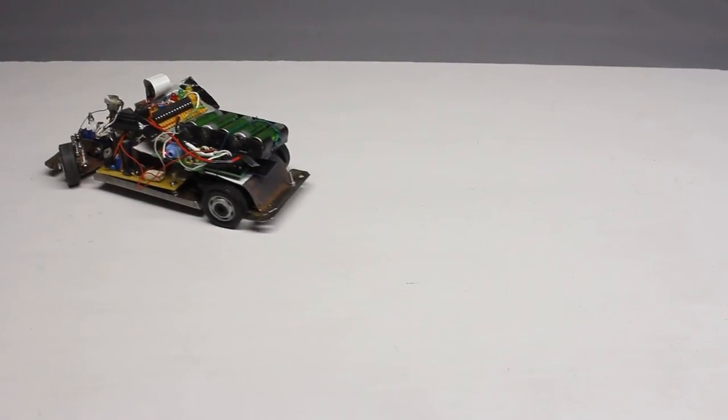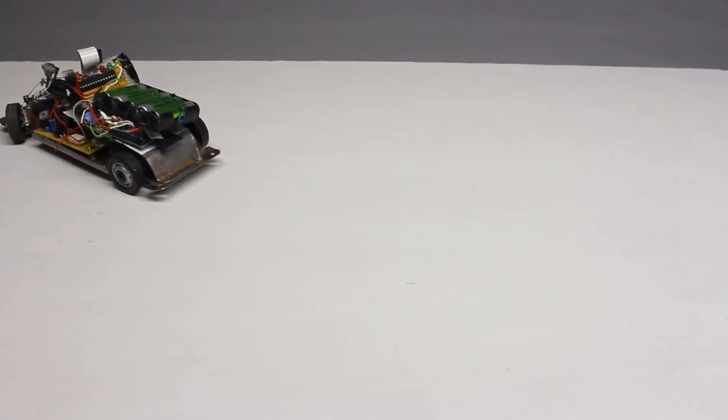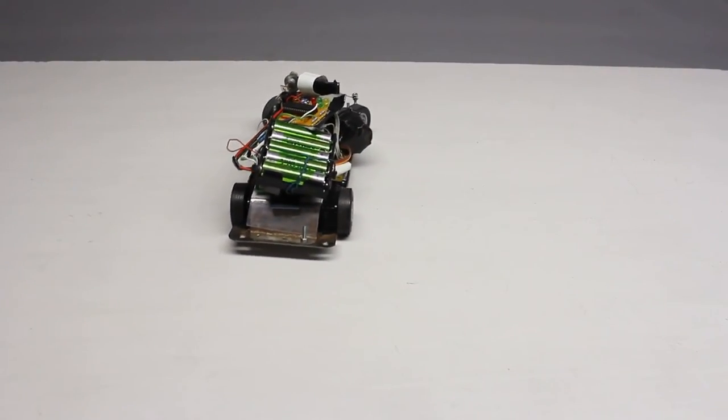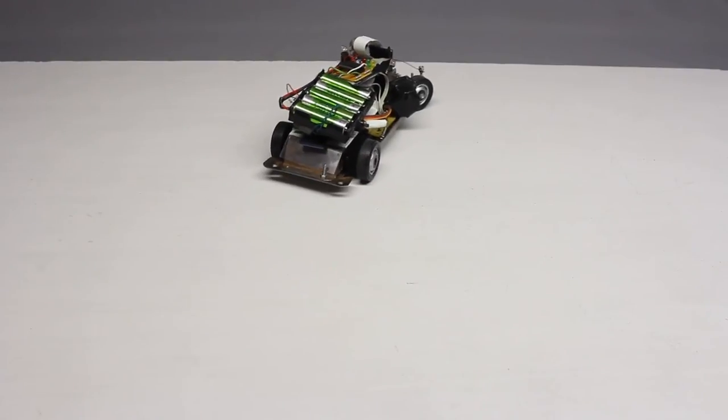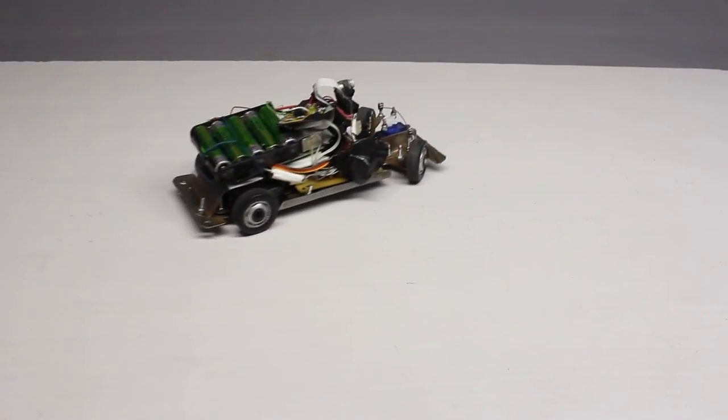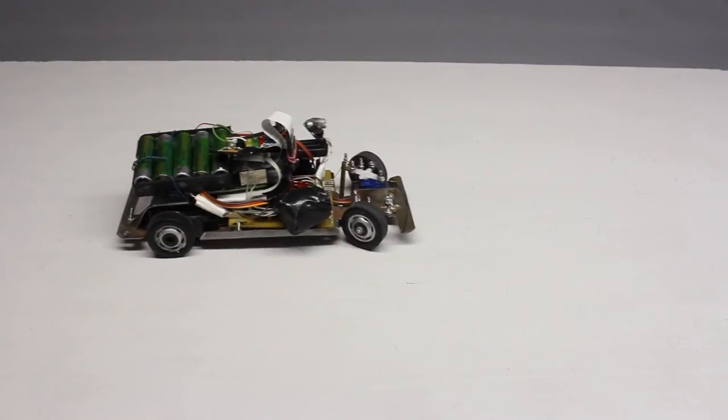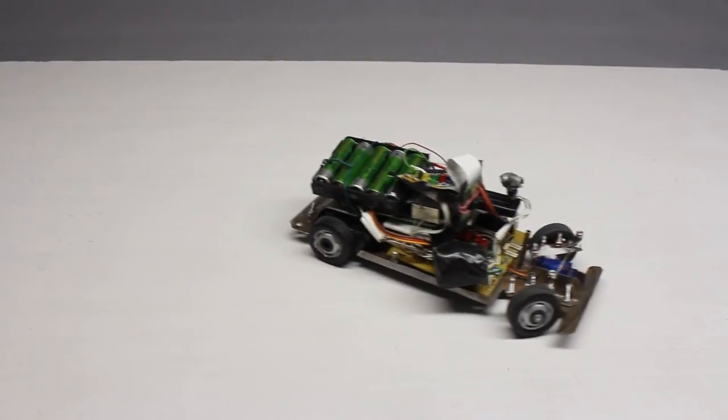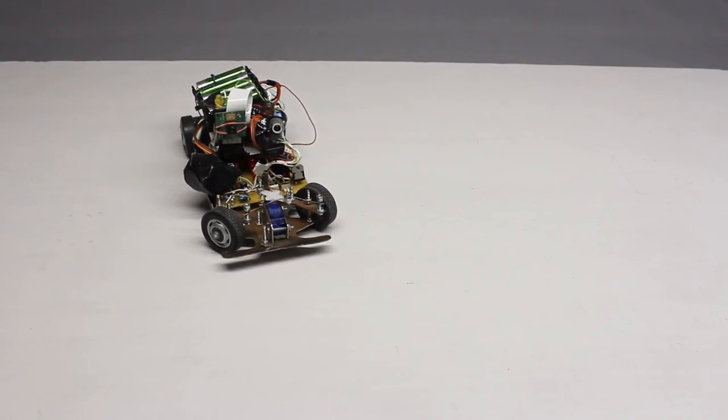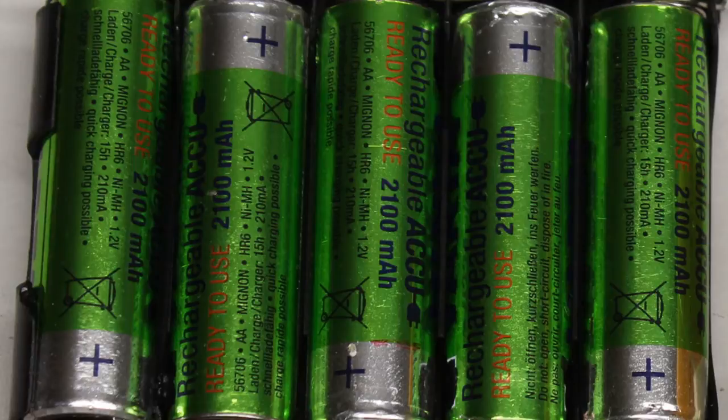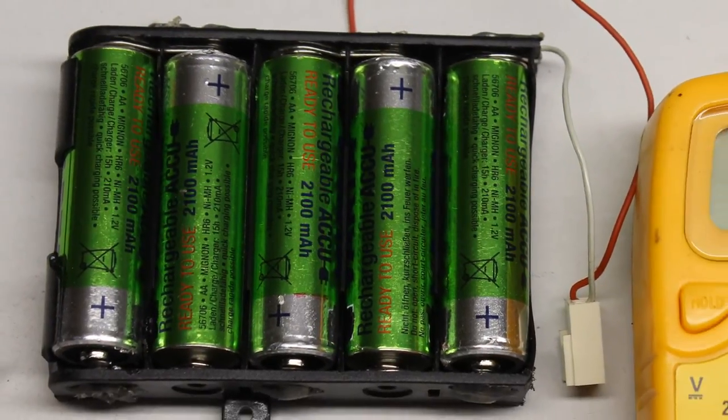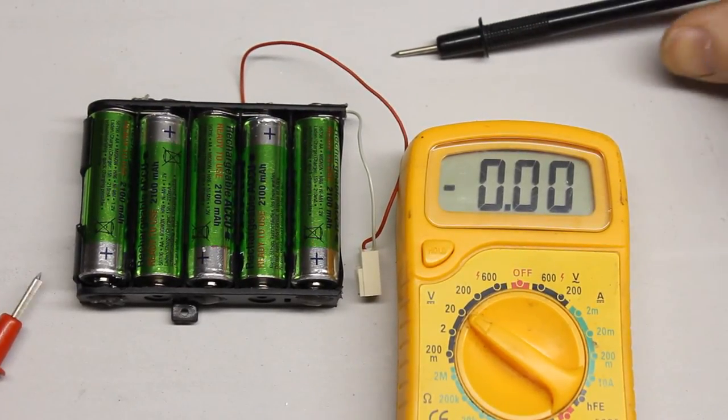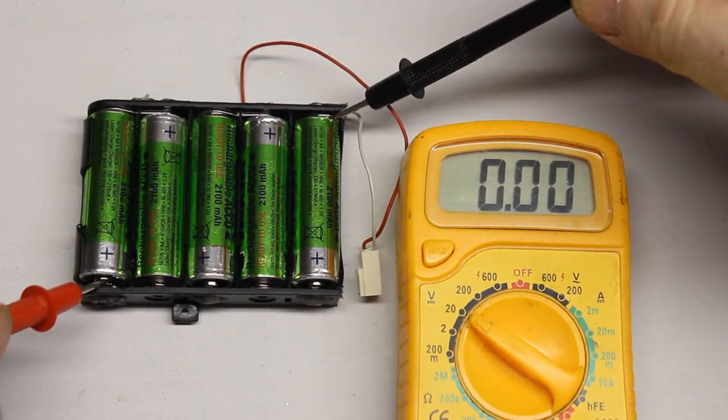Another way of bringing electric power to a mobile robot is using rechargeable batteries. Once more a Raspberry Pi control rover is used for the demonstration, this one has four wheels. Five nickel metal hydride batteries, each with a nominal voltage of 1.2V and a capacity of 2.1Ah are used as voltage source. Five times 1.2V give a total potential of 6V. The freshly charged battery pack has an output voltage of more than 7V.